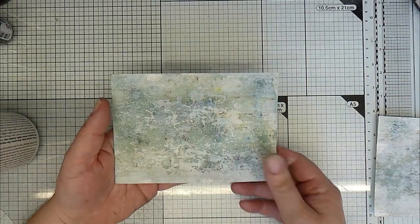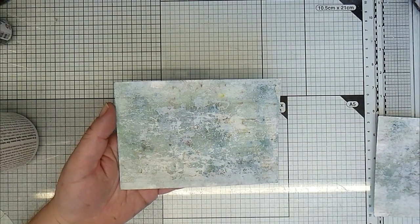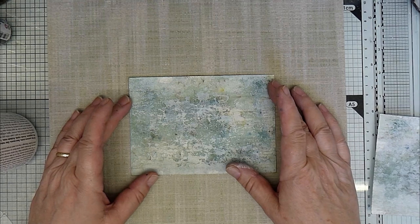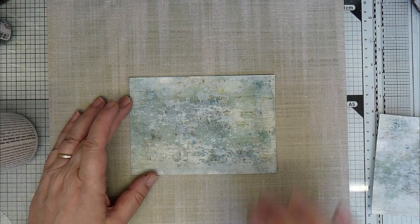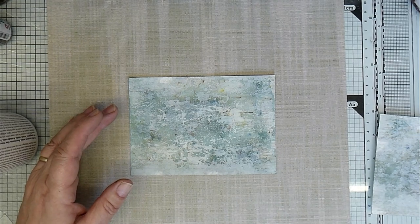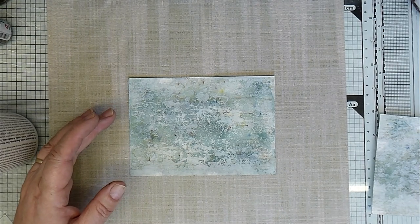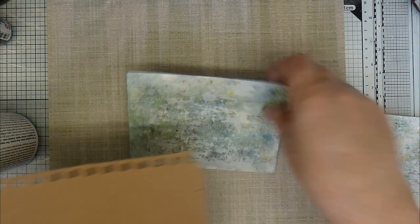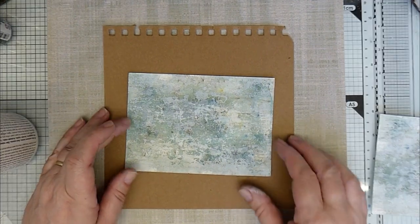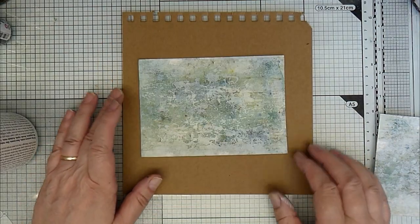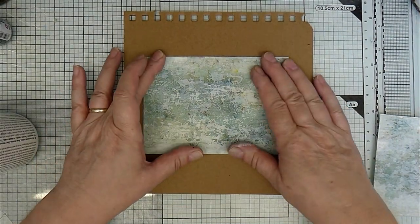Right. We've got our background. I've just realized that really it doesn't show up very well against my glass mat being so pale. So, if we put this down, it might show up a little bit better. Maybe something dark might show up better as well. Let's have a look. That's it. That shows up better. So, I'll just work on this piece of craft card at the moment.